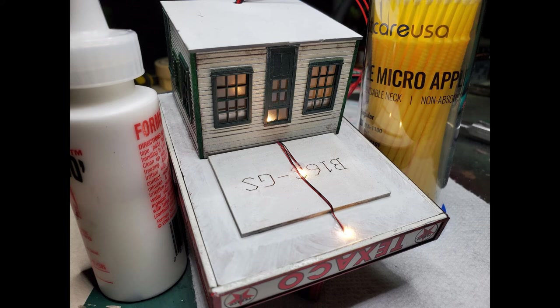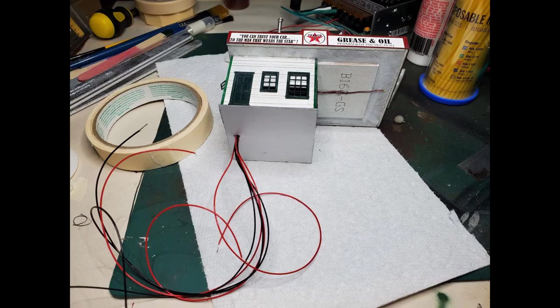I'll probably experiment with resistor values to get the light intensity I want. But really until I get it on the layout, I don't really know where I'm at with that. So that's something to be dealt with later. Once I had the lights tested, I glued the structure to the roof using canopy glue.